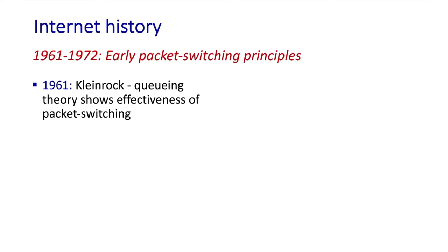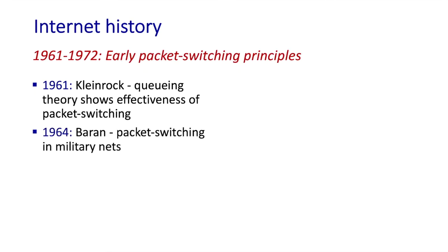The first paper published on packet switching was by Len Kleinrock, a graduate student at MIT and later a professor at UCLA. He used queuing theory to show the effectiveness of packet-switched networks for handling bursty traffic. By 1964, Paul Baran at the RAND Institute had begun investigating the use of packet switching in military networks, and at the National Physical Laboratory in England, researchers were also developing their ideas on packet switching.